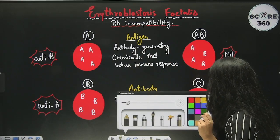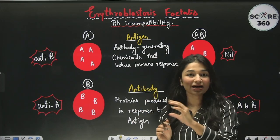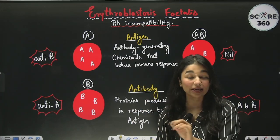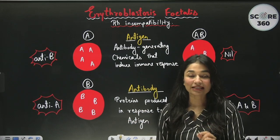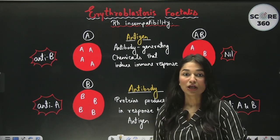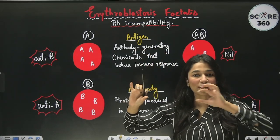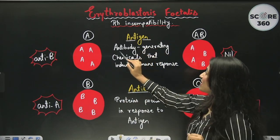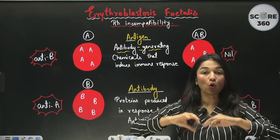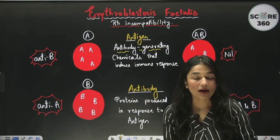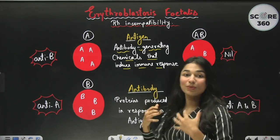In ABO blood grouping, what we have studied is that the antigens present on the surface of RBCs determine what the blood group will be. The first thing is the antigen — what do we mean by antigen? If you break the word: 'anti' comes from antibody, 'gen' comes from generating. So antigen is basically an antibody-generating chemical — any chemical which generates antibodies in our body. These are chemicals that induce an immune response.